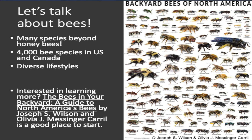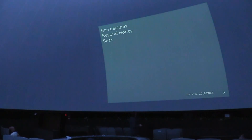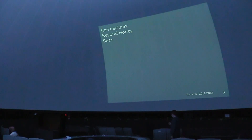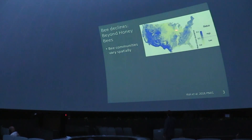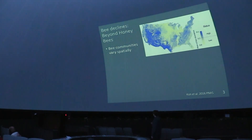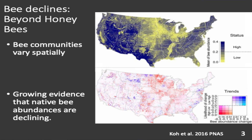There's a really awesome book called 'Bees in Your Backyard' that I recommend — this diagram is from that book. When we talk about pollination declines, yes, we've noticed stark declines in honeybee numbers, but other bees are also in decline. Bee communities vary across the US; the Southwest has tons of species whereas the Midwest is somewhat more depauperate. There's growing evidence that a number of native species are also declining.